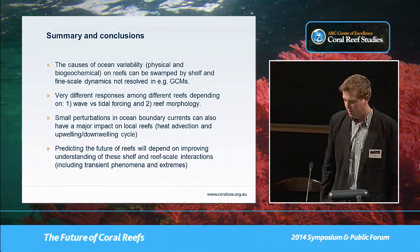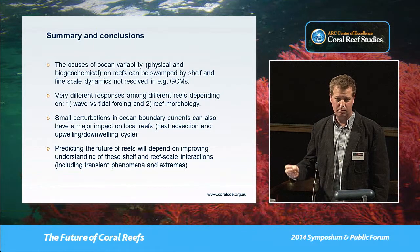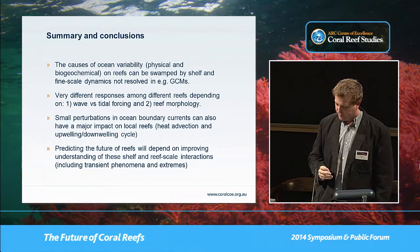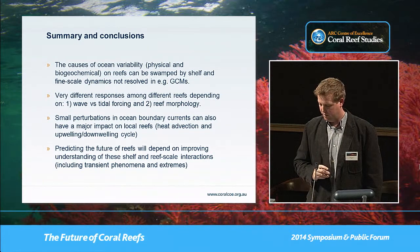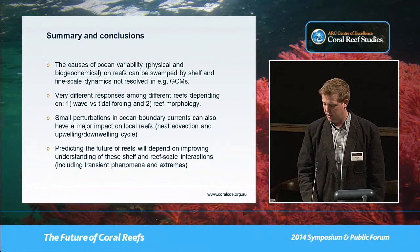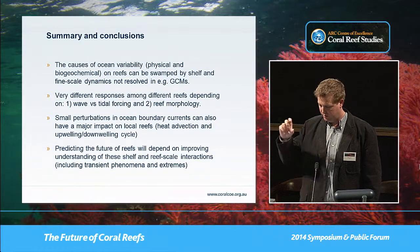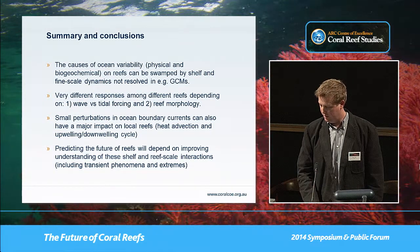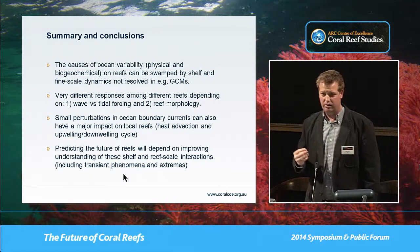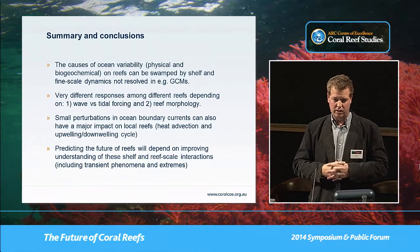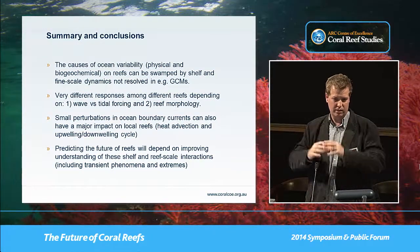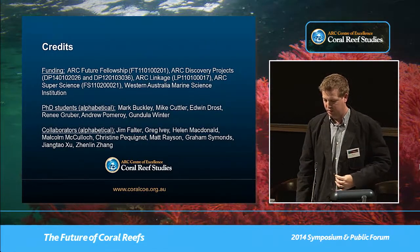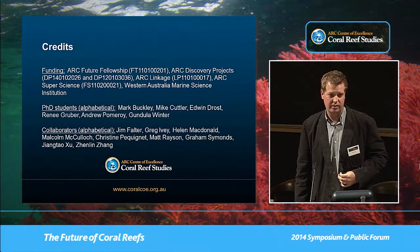In summary, the causes of ocean variability on reefs can be swamped by processes we're not resolving well — things occurring on the shelf and fine-scale dynamics. We get very different responses depending on whether we have wave-driven or tide-driven reefs, strongly dependent on morphology. Even small perturbations to ocean boundary currents can dramatically impact reefs by changing heat advection and upwelling/downwelling cycles. Predicting the future of reefs depends not simply on climate models and ocean basin predictions, but also on understanding local and regional effects.